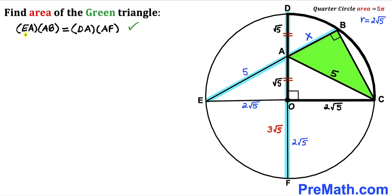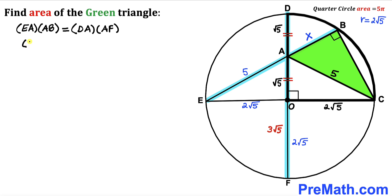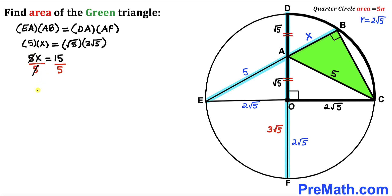Applying the intersecting chords theorem: EA times AB equals DA times AF, which gives us 5 times x equals √5 times 3√5. Simplifying the right side: √5 times √5 is 5, and 5 times 3 is 15. Dividing both sides by 5 to isolate x, we find x equals 3 units. Therefore segment AB is 3 units.